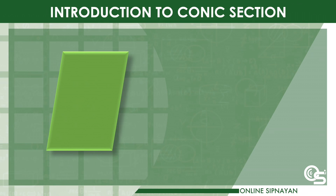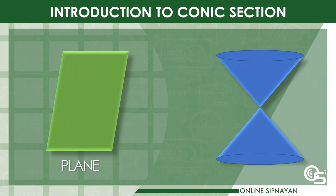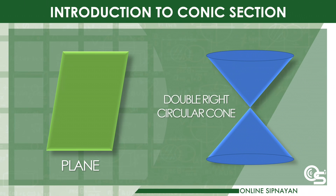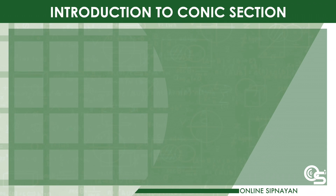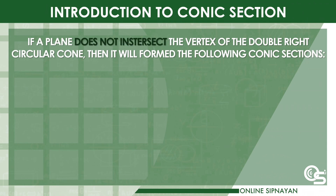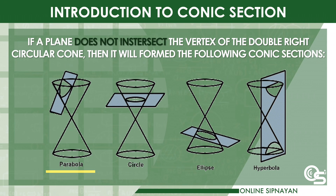If a plane is used to cut the double right circular cone, there will be curves formed as the intersection. We need to consider the following: first, if a plane does not intersect the vertex of the double right circular cone, then it will form the following conic sections. First, the parabola — the plane is parallel to one of the generators.